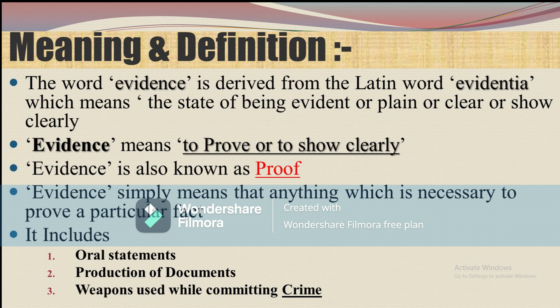To prove a particular fact or crime, there is a necessity of something. That includes oral statements — that is, in oral form — or production of documents in written form, or instruments and weapons used while committing a crime. For example, in the case of murder, a knife used may also be considered as evidence.